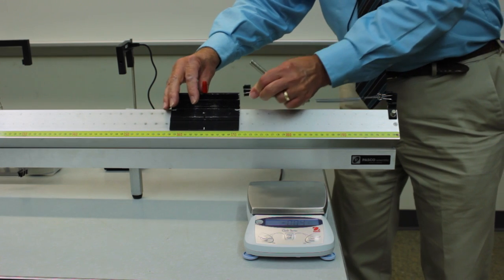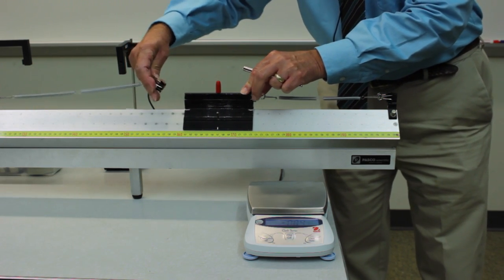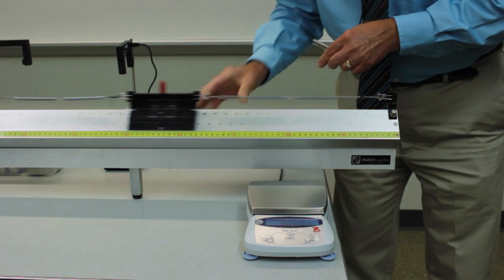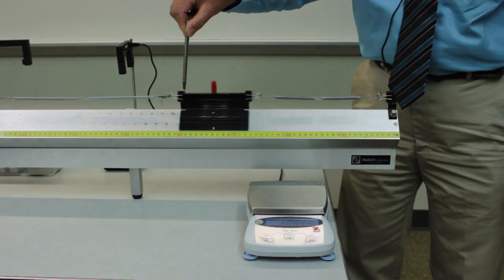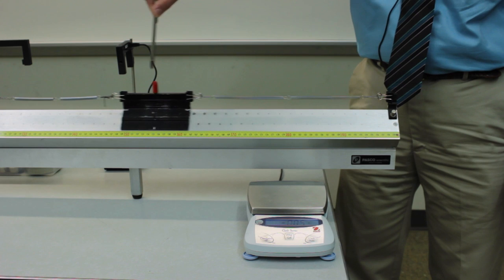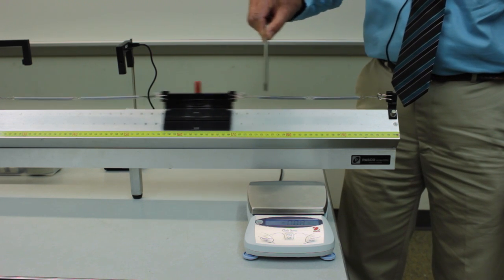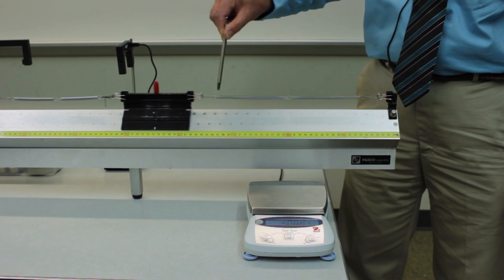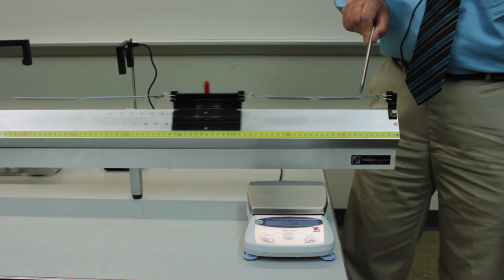Notice that when the springs are attached, what's moving is not just the glider. Certainly the clips that attach the springs are also moving. And the springs are moving as well. So this portion of the spring is moving about as much as the glider. But this end of the spring is not moving.